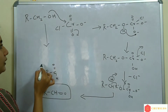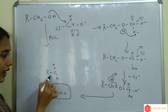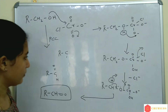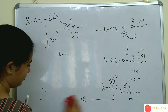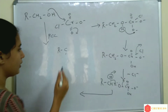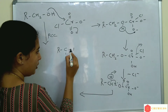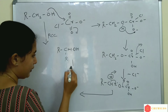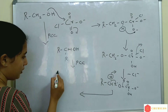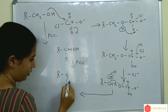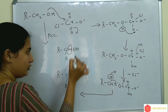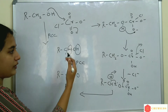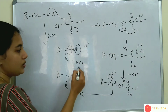Primary alcohol using PCC is oxidized to aldehyde. Now for a secondary alcohol: this is a secondary alcohol, and when we oxidize this with PCC, a ketone is formed. This hydrogen is removed and a double bond to oxygen is formed — a ketone is formed when we oxidize a secondary alcohol using PCC.